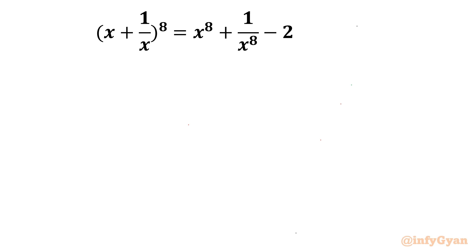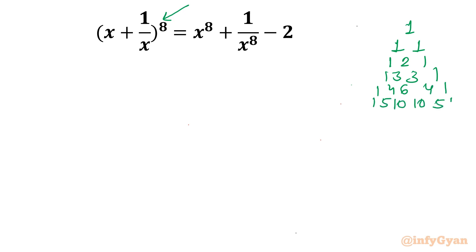Let's get started by writing Pascal's triangle. We have to find the expansion for power 8, so we need the coefficients for power 8. Let us complete this Pascal's triangle: 1 1 | 1 2 1 | 1 3 3 1 for power 3 | 1 4 6 4 1 for power 4 | 1 5 10 10 5 1 for power 5 | 1 6 15 20 15 6 1 for power 6 | 1 7 21 35 35 21 7 1 for power 7.